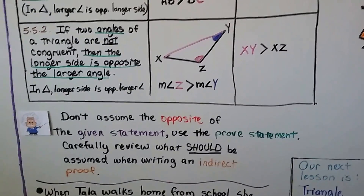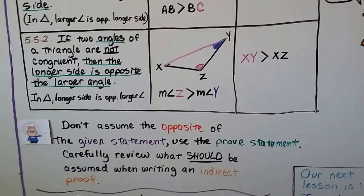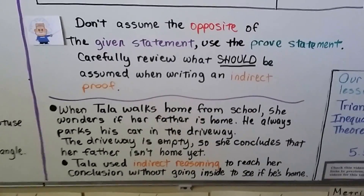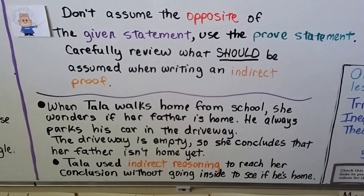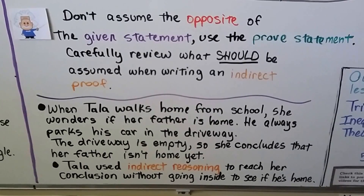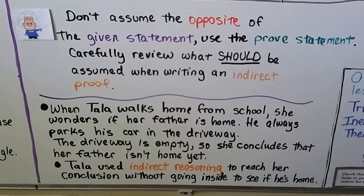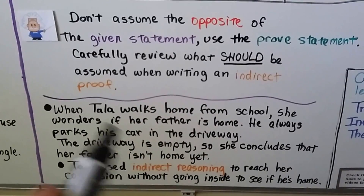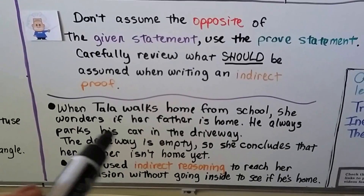Don't assume the opposite of the given statement — we use the prove statement. Carefully review what should be assumed when writing an indirect proof. Here's an example of indirect reasoning: when Tala walks home from school, she wonders if her father is home. He always parks his car in the driveway, and the driveway is empty, so she concludes her father isn't home yet. Tala used indirect reasoning without going inside — if she had used direct reasoning, she would have gone in to see if he was home.